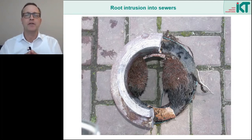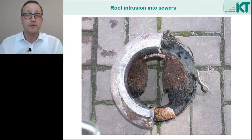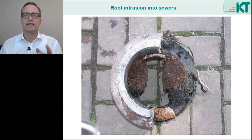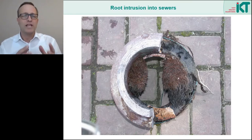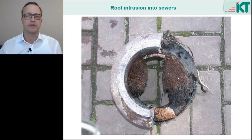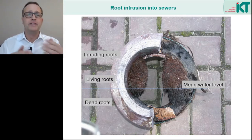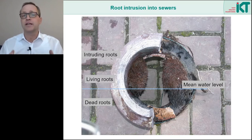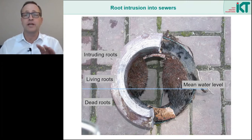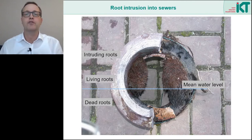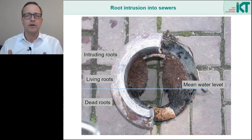For a long time, people thought there is water and nutrients in the sewers — that must be the reason. But if we look at a wastewater pipe, the roots only grow in the upper part of the pipe. Looking very closely, we can see where the mean water level was — a kind of borderline. Above this line the roots have grown in and are still alive. But below this line, in the sewage area, the roots are dark, dead and rotten. Obviously the sewage is not very attractive for the roots — they become diseased and die. But if the sewage is not the motive for the ingrowth, what is it?